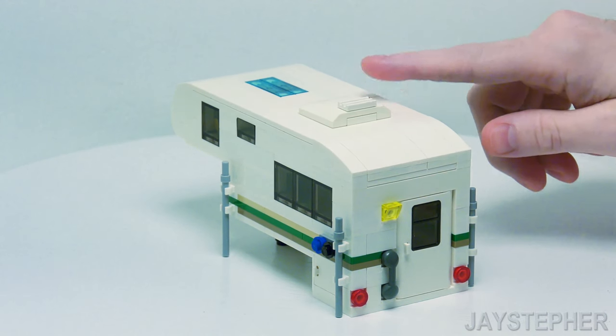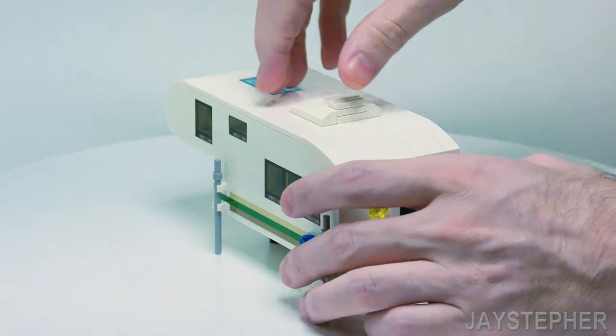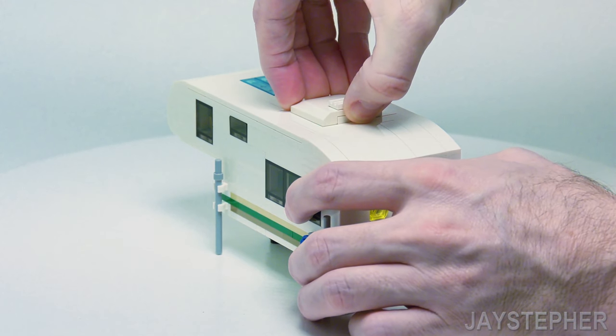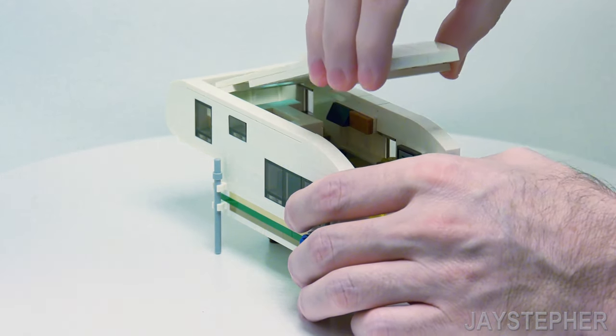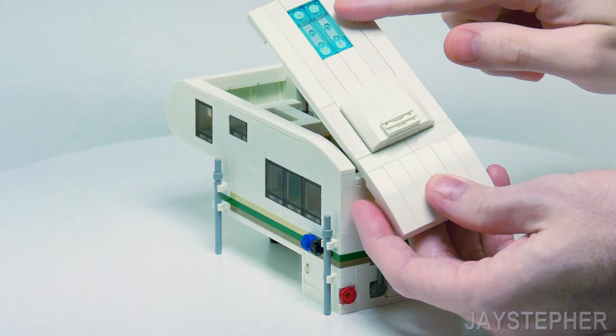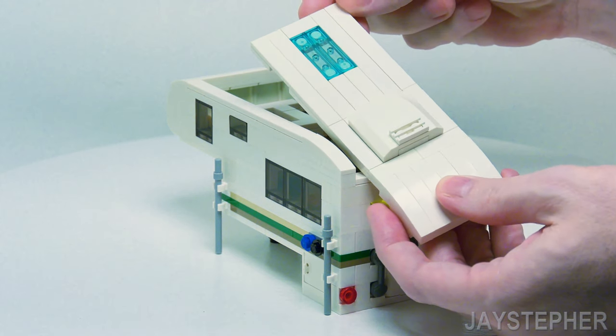Now here's the top. This does remove. It's a bit of a challenge to get this off. It's a nice, tight fit. So here's the top with the air conditioner and a sunroof.